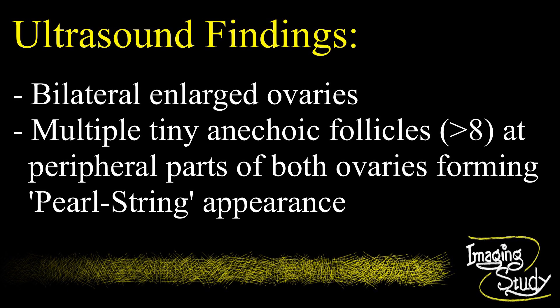On ultrasound, ovaries are enlarged bilaterally. Multiple tiny anechoic cystic follicles are noted at the peripheral parts of both ovaries, forming the typical pearl string appearance.